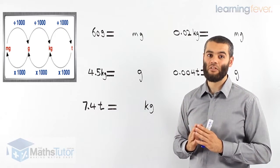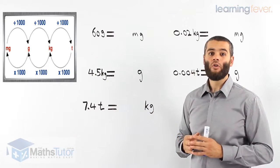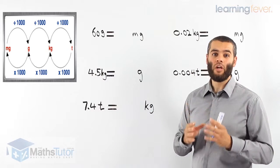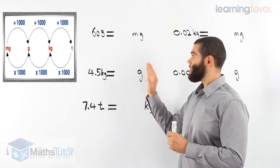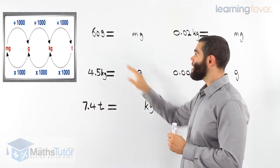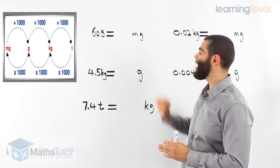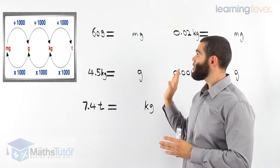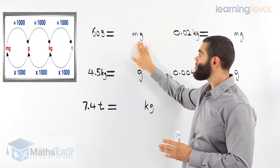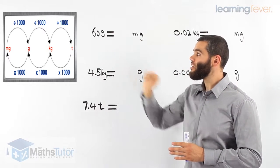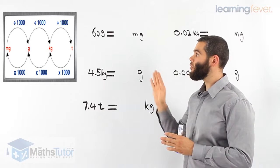Very important for us to know. So let's see how it's done. We either divide, or if we are going backwards, we actually times. Here, we're going to be converting large units of mass to smaller units of mass. Converting large to small, we multiply by a thousand for all of them.